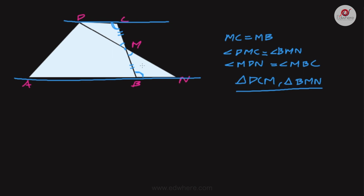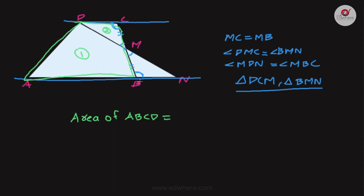Now for the second part of the question, we look at the relation between the area of quadrilateral ABCD and triangle ADN. The area of quadrilateral ABCD can be written as the area of ABMD plus the area of triangle DCM.